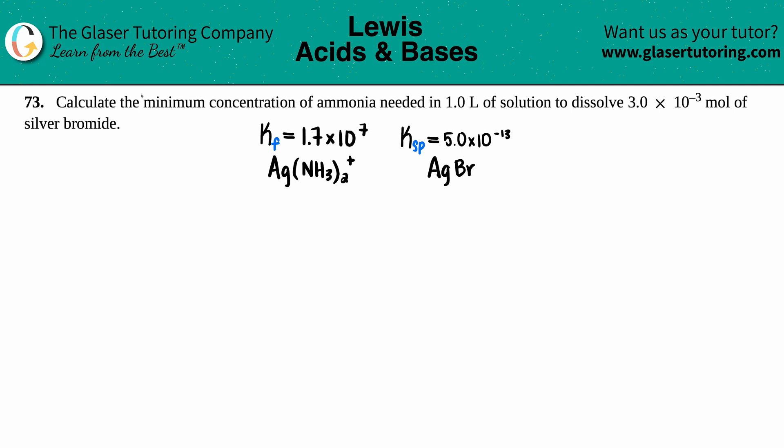Number 73. Calculate the minimum concentration of ammonia needed in 1.0 liters of a solution to dissolve 3.0 times 10 to the negative third moles of silver bromide. Okay, so where do we go from here? Well, there's a couple of things that we have to know, right? They're asking for the...